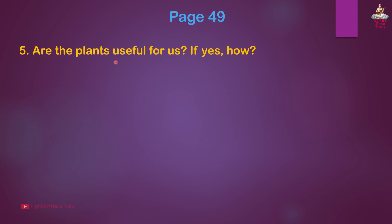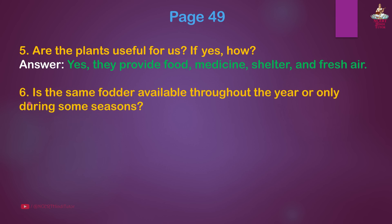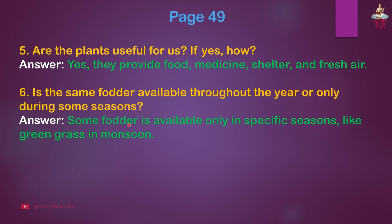Question 5: Are the plants useful for us? If yes, how? Answer: Yes, they provide food, medicine, shelter and fresh air. Question 6: Is the same fodder available throughout the year or only during some seasons? Answer: Some fodder is available only in specific seasons, like green grass in monsoon.